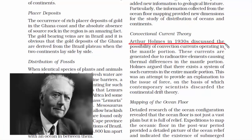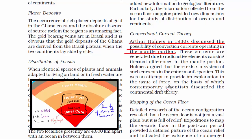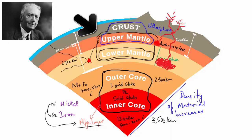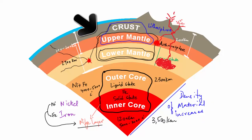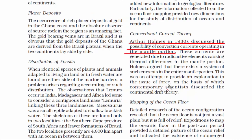In a similar sense, Arthur Holmes in 1930 said there is a possibility of convection currents operating in the mantle portion. The earth is divided into crust, mantle, and core. The upper mantle is also called the asthenosphere, meaning the weaker layer. Arthur Holmes argued that convection currents operate in the upper mantle, where all rock is in a molten state moving in a circular path. He said there exists a system of such currents in the entire mantle, which became a major contribution and the basis on which contemporary scientists discarded the continental drift theory.